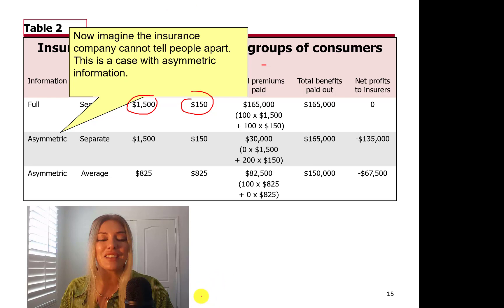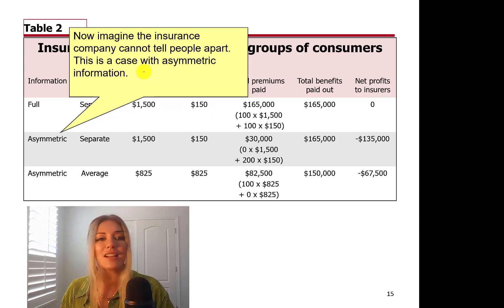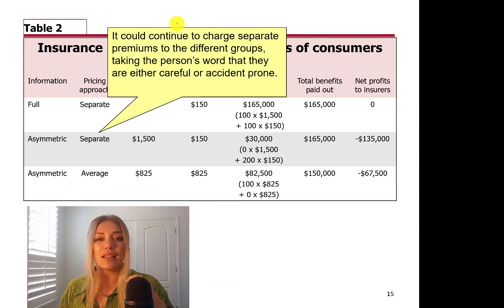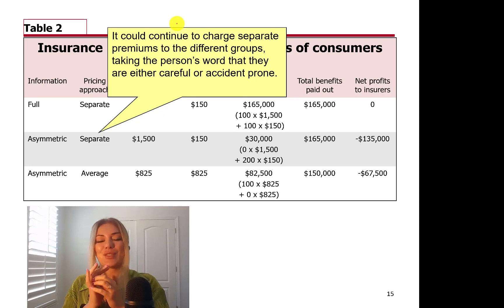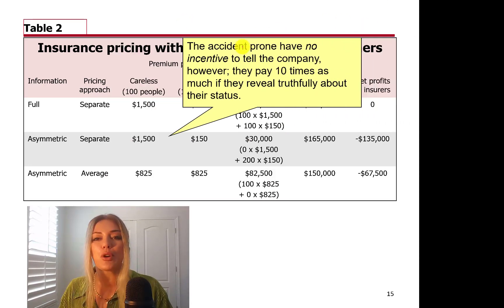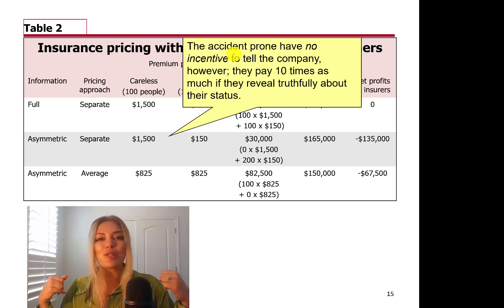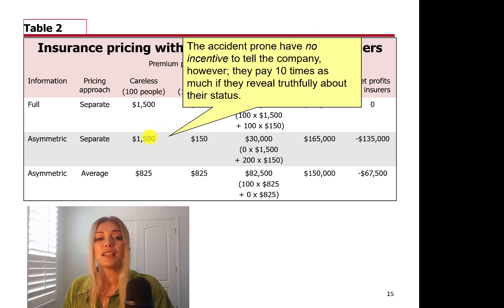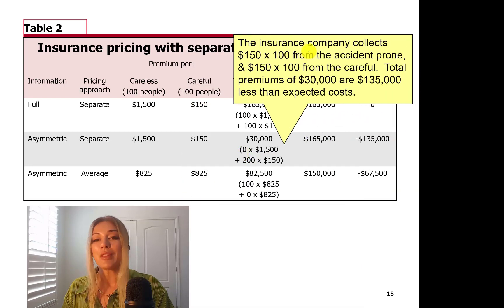Now let's look at the case where the insurance company doesn't know who is careful and who is careless — this is asymmetric information. The company might continue to charge separate premiums, taking the person's word for what they are. But accident-prone people have no incentive to tell the company they are prone to accidents, because then they would pay $1,500 instead of $150. So the insurance company ends up collecting only $150 from accident-prone people because they simply lied.